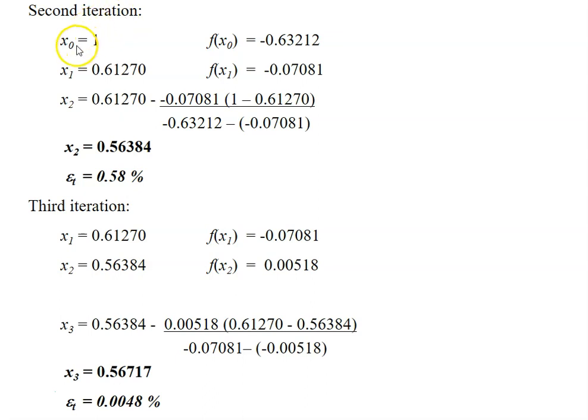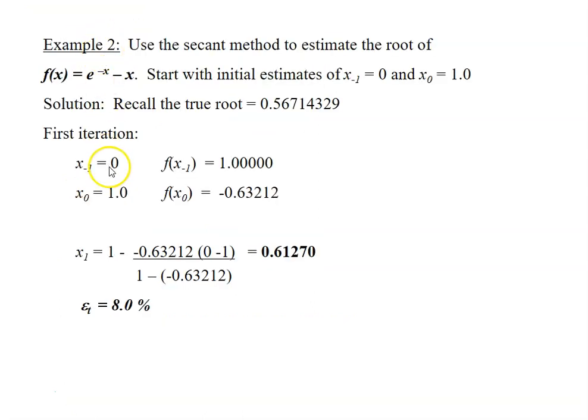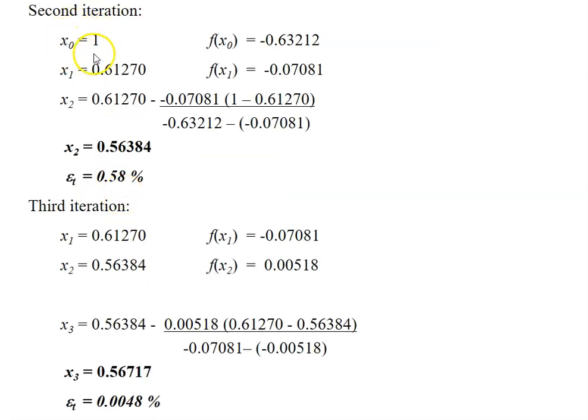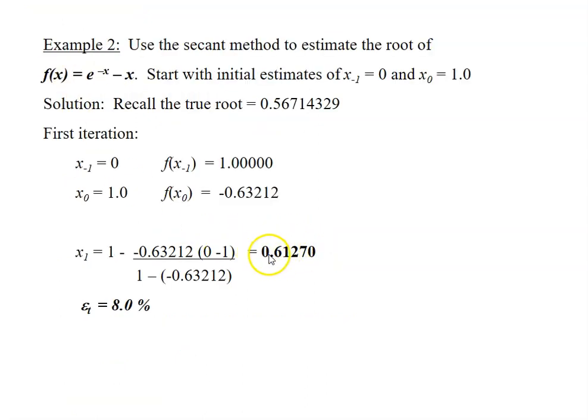they are still using x0 equals to 1. But then the second initial guesses of x is the one that they have just calculated, which is 0.61270.